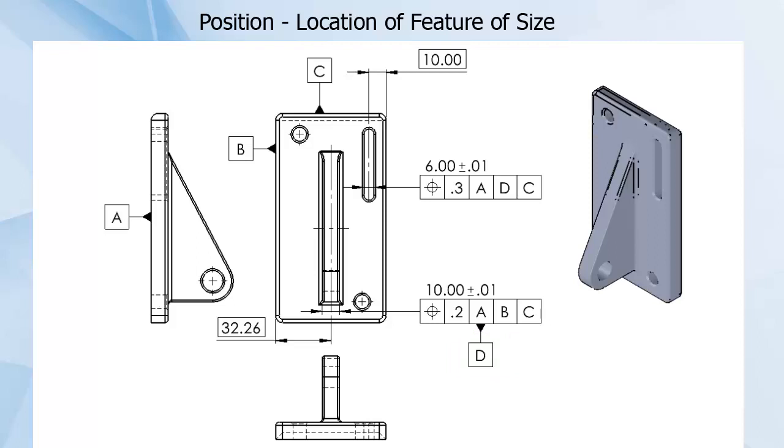An inspection process for this callout would involve stabilizing the part by A, the back, and then by the tab, perhaps with two gauge plates that held both sides of the tab, and then by C, the upper edge.